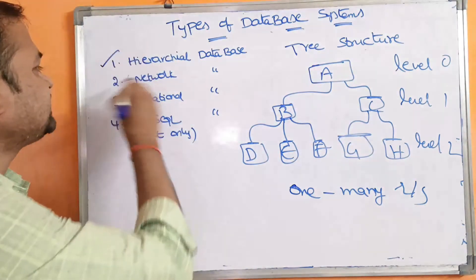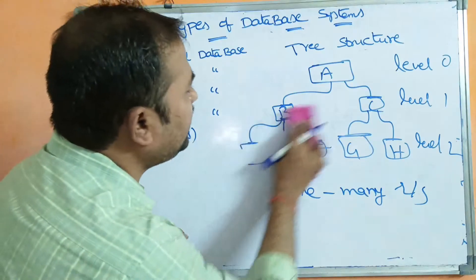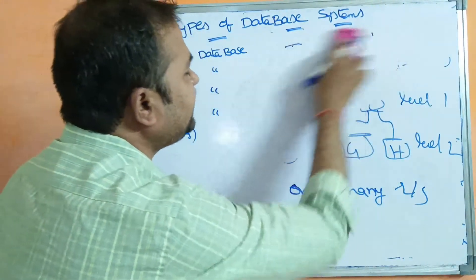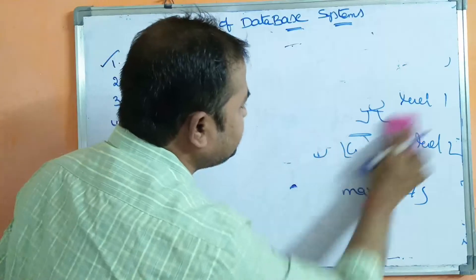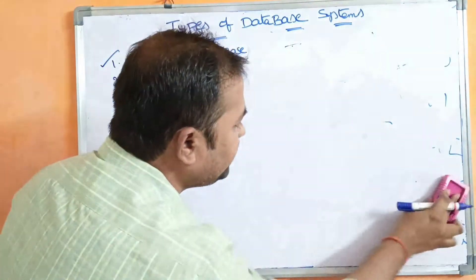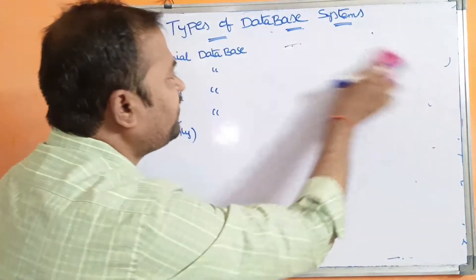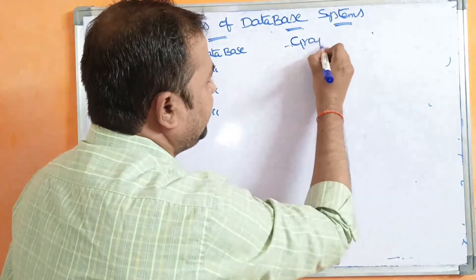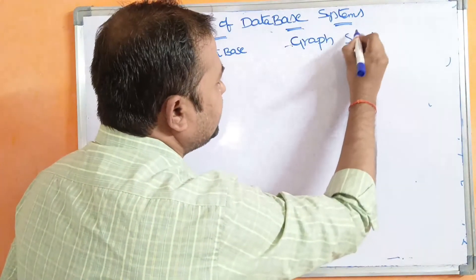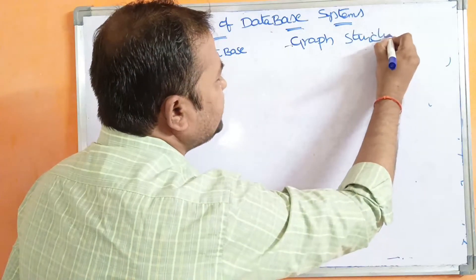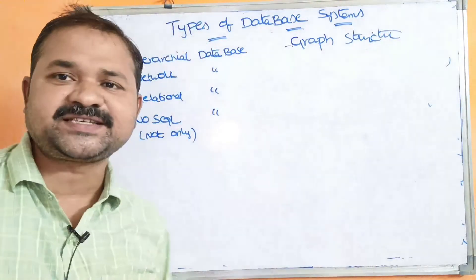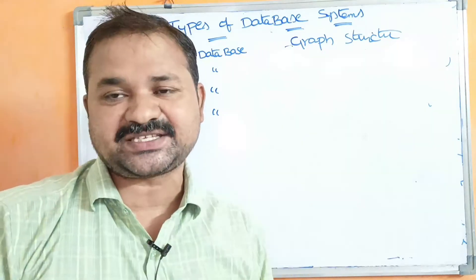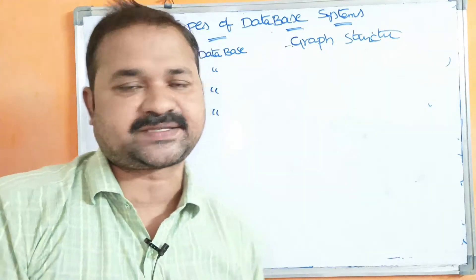The second type of database is the network database. Network database is an extension to the hierarchical database and mainly follows a graph structure. A graph is a collection of nodes connected by edges with the help of arcs.